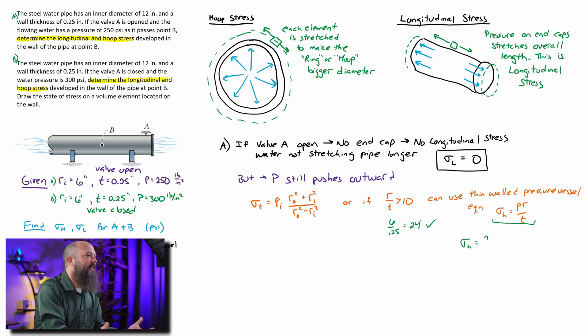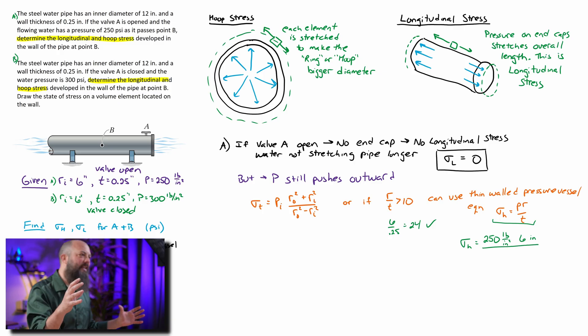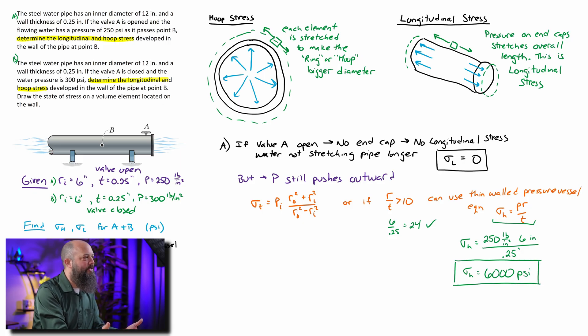And then in that case, your hoop stress is just going to be the pressure times the radius divided by thickness. And this gets us to 6,000 PSI or 6 KSI if you want to work in kips per square inch.